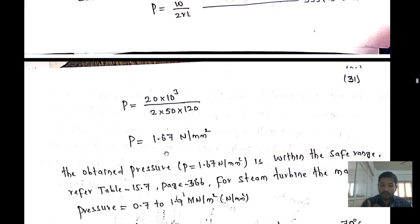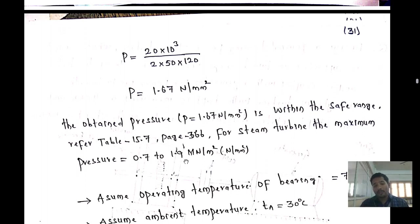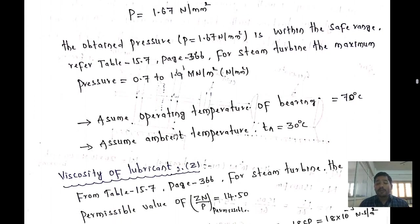The obtained pressure value of 1.67 N/mm² must be checked against the safe range. From table 15.7, page 366, for a steam turbine the maximum pressure should lie between 0.7 to 1.9 MN/m². Since 1.67 lies within this range, our design is safe.